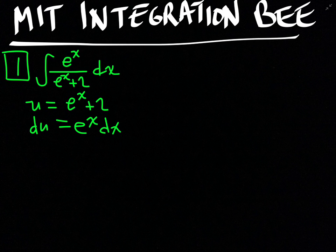Using this substitution, our integral becomes: e^x dx becomes du, and e^x + 2 becomes u, which is essentially the same as the integral of 1/u du.